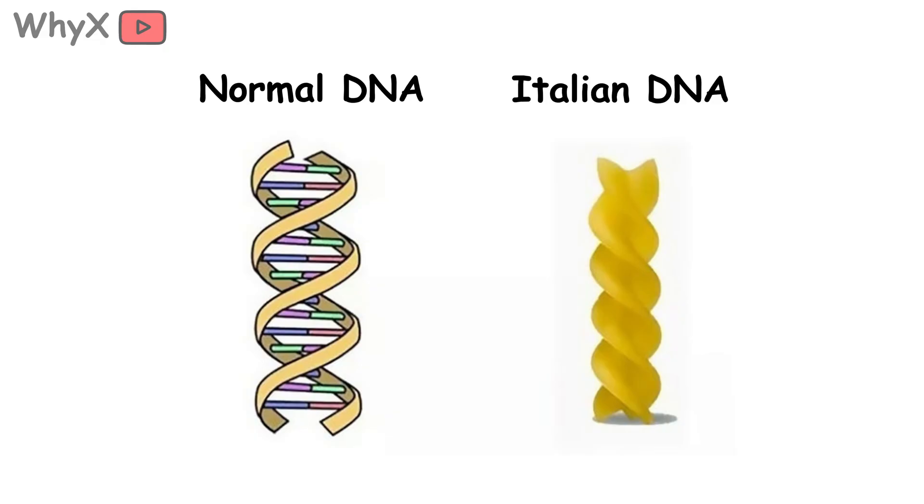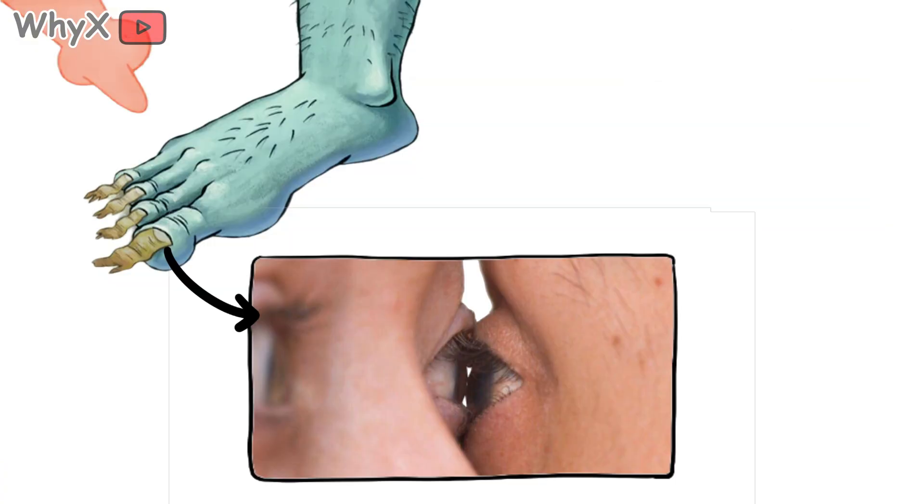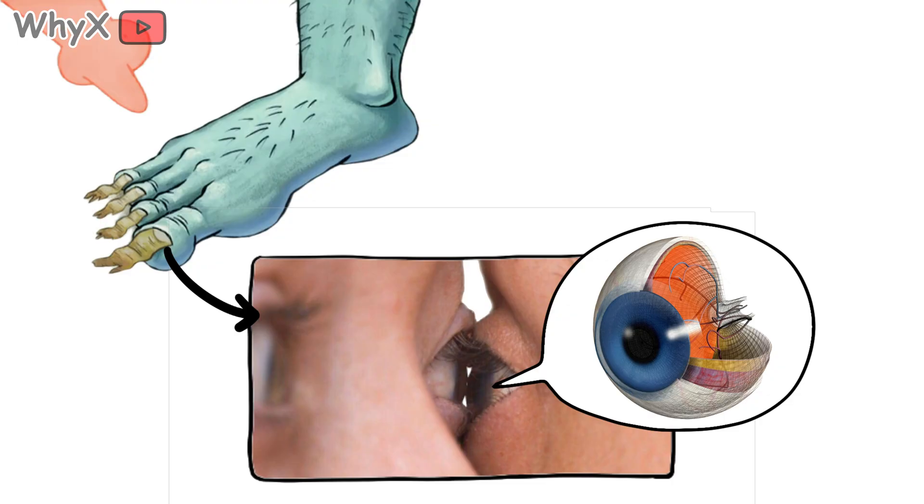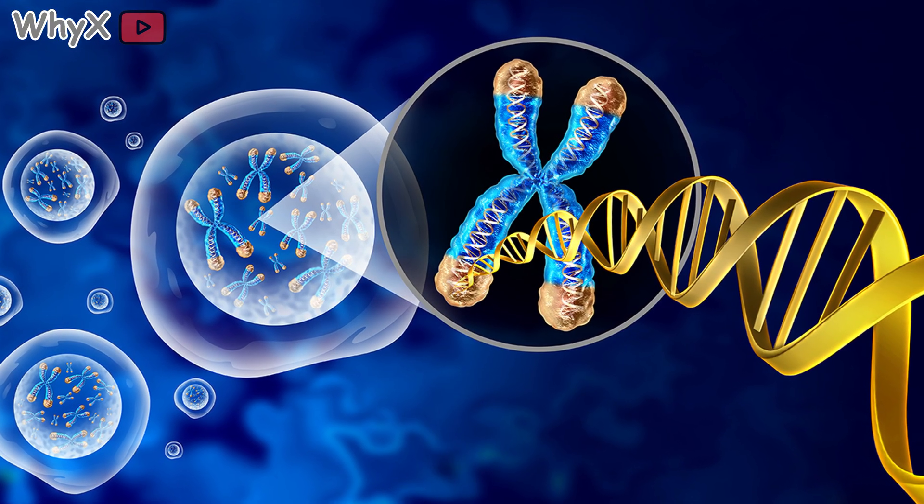You're basically a walking spool of cosmic thread, and the wildest part. Nearly every cell carries the entire library. Your toenail has the recipe for your eyeball. Your eye cell has the recipe for your pancreas. The reason they specialize is that cells selectively read only the chapters they need.